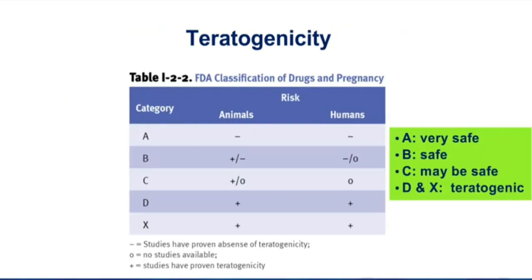We have a table on teratogenicity — basically how the FDA classifies drugs into pregnancy categories and their pregnancy risks. We have five different categories: A, B, C, D, and X, all based on data collected either in animals or in humans, and hopefully both. When we call a drug Category A, those drugs are considered very safe in pregnancy. The bad news is that almost nothing is in Category A — folic acid is in Category A. Pretty much folic acid and water is about what we're willing to give in pregnancy.